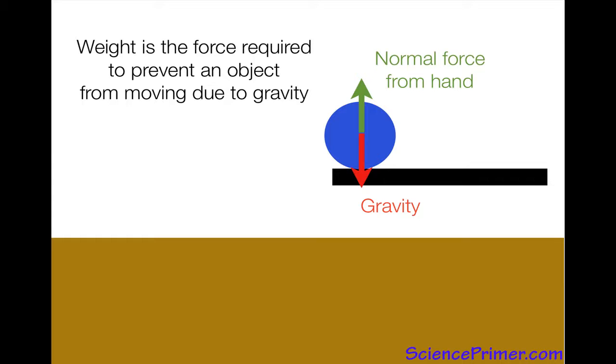And in this cartoon representation where the black bar is my hand, gravity is pulling down on the ball. The ball is not moving because my hand is applying an upward force. And this is referred to as a normal force.